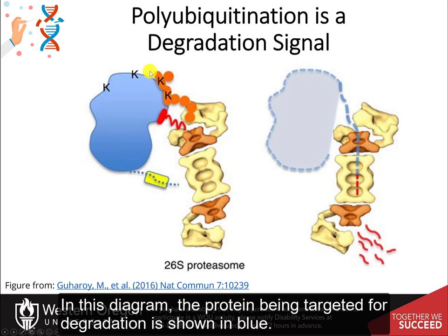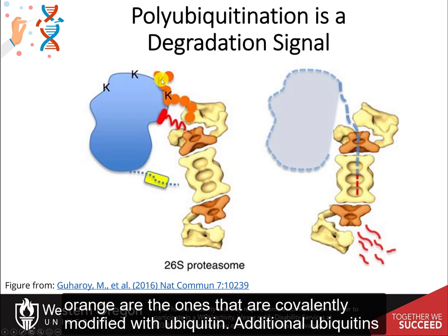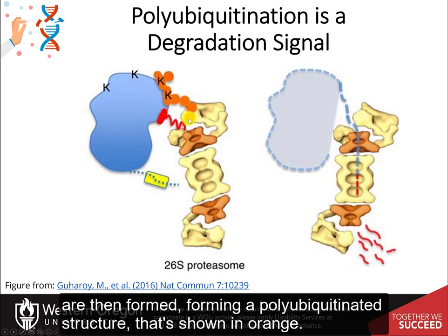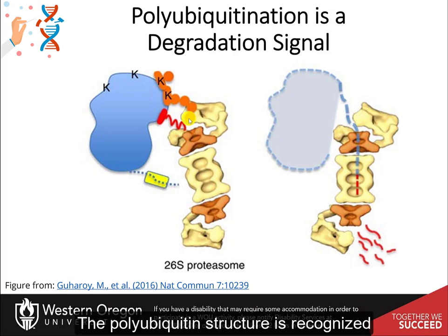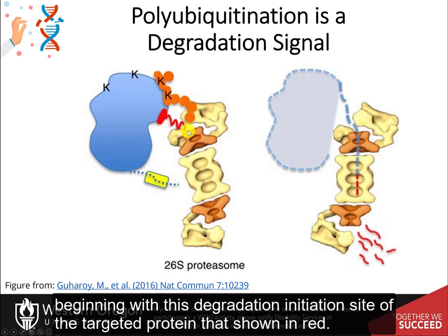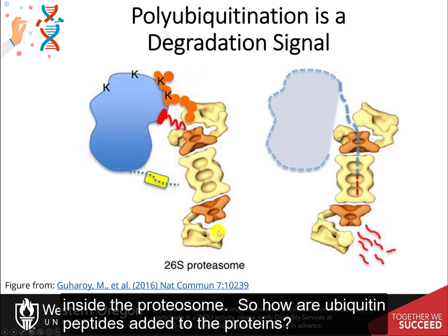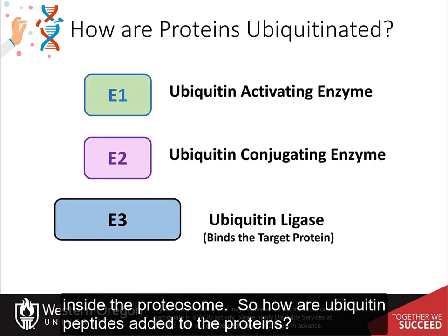In this diagram, the protein being targeted for degradation is shown in blue. On the upper surface of the protein are several lysine residues marked in K. The two marked in orange are the ones that are covalently modified with ubiquitin. Additional ubiquitins are then added, forming a polyubiquitinated structure shown in orange. The polyubiquitin structure is recognized by the proteasome regulatory domain, shown here in yellow, and protein unfolding and degradation ensues, beginning with the degradation initiation site of the targeted protein shown in red. The ubiquitin peptides are released and recycled in the process, rather than being degraded inside the proteasome.